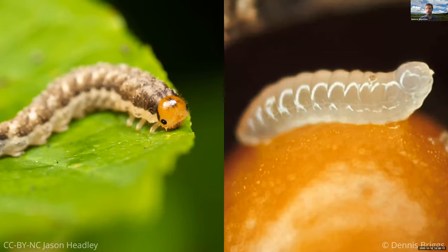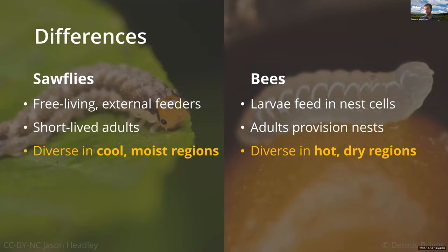There are some differences, of course. Sawflies are free-living larvae feeding externally on host plant tissues, whereas larval bees have their cozy little homes inside nest cells feeding on pollen provisions. As a result, bee adults tend to be longer-lived — at least females — because they're spending time collecting pollen to provision their nests, whereas sawfly adults are only alive for a few days, just long enough to mate and lay their eggs. Most notably, at least in my opinion, are their diversity patterns. Globally, sawflies are more diverse in cool moist regions, particularly in the northern hemisphere, whereas bees are more diverse in hot and dry regions.